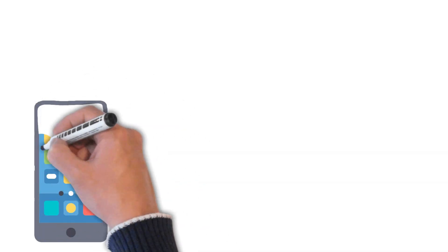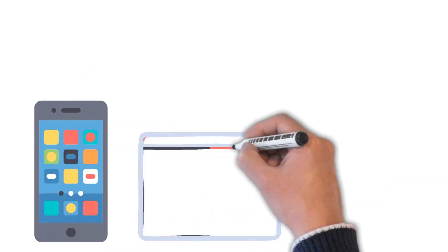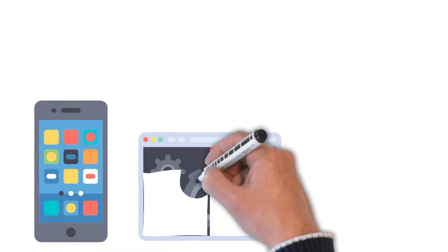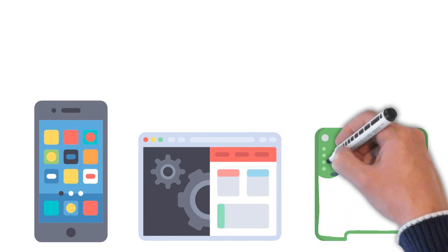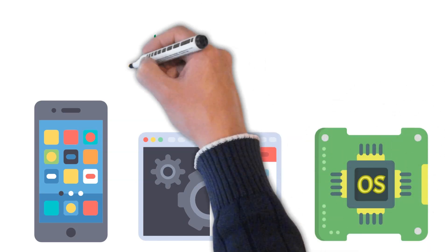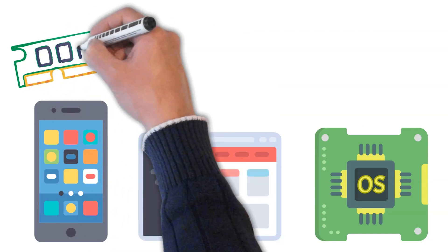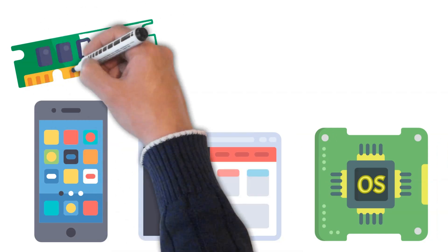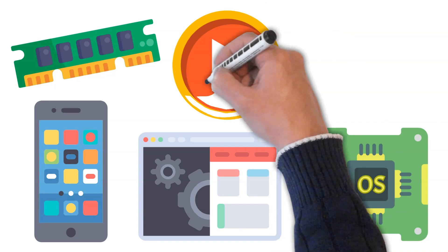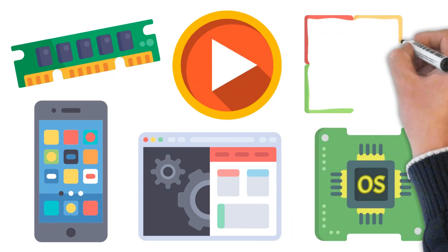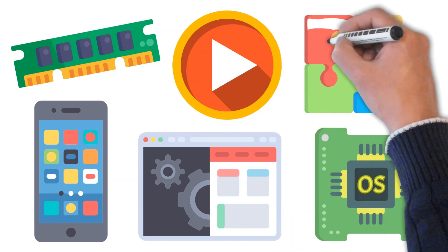Every time you open an app, save a file, or even press a key, something in the background makes it all work smoothly. That something is the operating system. It's the core software that manages your computer's hardware, runs your programs, and keeps everything in sync. But how does it actually work, and what's inside it? Let's take a closer look.